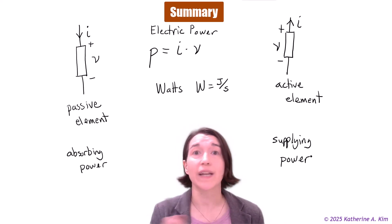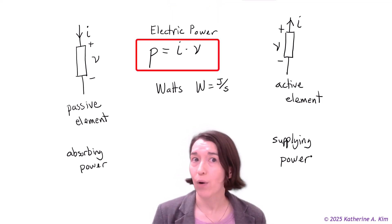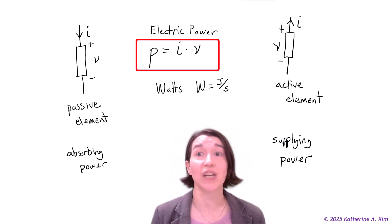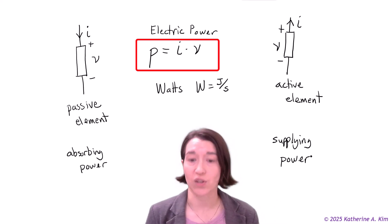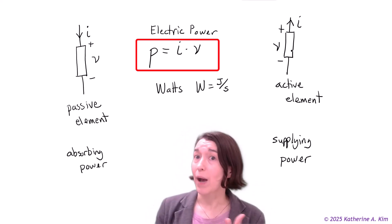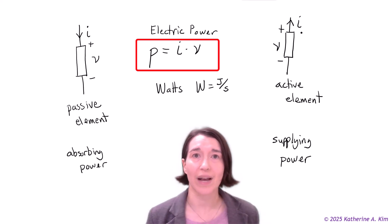So we can say for any element, both passive and active, that the power is going to be equal to the voltage times the current, and that's going to be measured in watts. For a passive element, it will be absorbing power because current will be going into the positive node. And the active element would be supplying power and the current will be coming out of that node. So that's electric power.